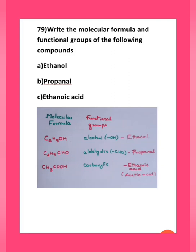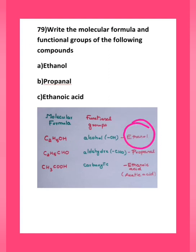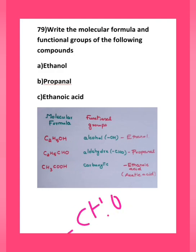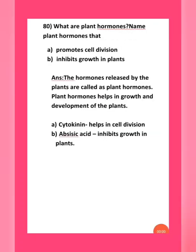Question number 79: write the molecular formula and functional groups of ethanol, propanol, and ethanoic acid. Ethanol has molecular formula C₂H₅OH and belongs to the alcohol functional group (–OH). Propanol has molecular formula C₂H₅CHO and belongs to the aldehyde functional group (–CHO). Ethanoic acid, also called acetic acid, has molecular formula CH₃COOH and belongs to the carboxylic acid functional group.